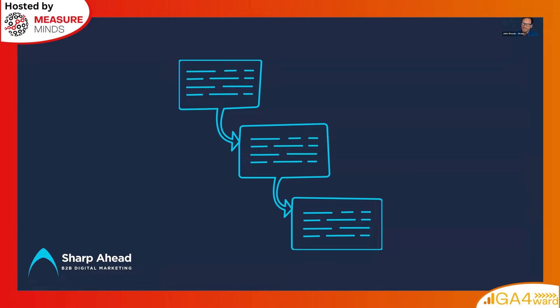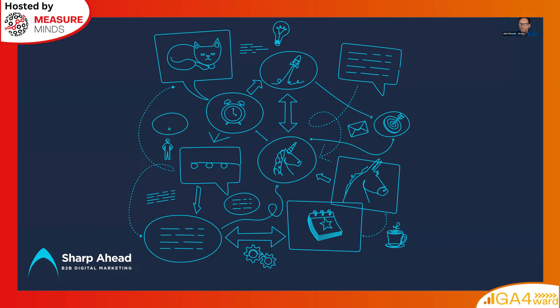For B2B, the sales process probably has a funnel with a few steps: a prospective client realizes they have a need, gets in touch to discuss it, the sales team puts a proposal together with an ROI calculation, the client goes through their purchasing process, signs off, and implementation starts. Kind of three or four steps where somebody progresses through a funnel.